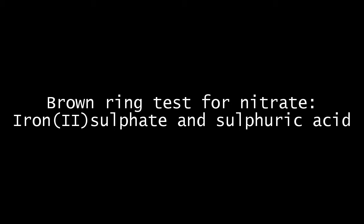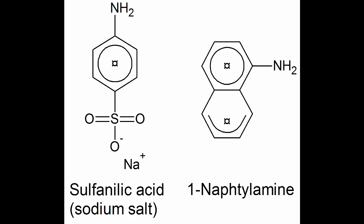The second test is called brown ring test. It is used to detect nitrate ions in solution. Let's take a look at the chemistry that is used for the Lunges test. As we mentioned, it uses an azoic coupling. This reaction is most often used to prepare dyes.